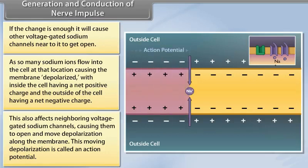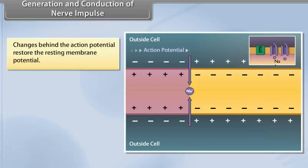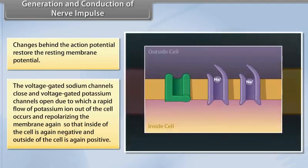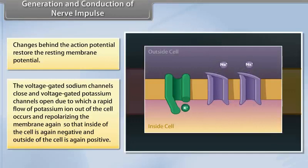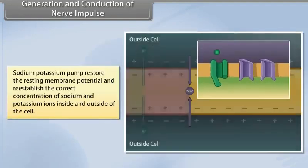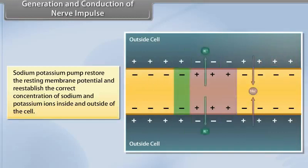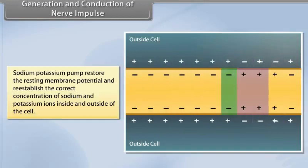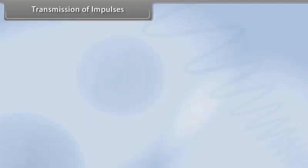This moving depolarization is called an action potential. Changes behind the action potential restore the resting membrane potential. The voltage-gated sodium channels close and voltage-gated potassium channels open, causing a rapid flow of potassium ions out of the cell and repolarizing the membrane again, so that inside of the cell is again negative and outside is again positive. Sodium-potassium pumps restore the resting membrane potential and re-establish the correct concentration of sodium and potassium ions.